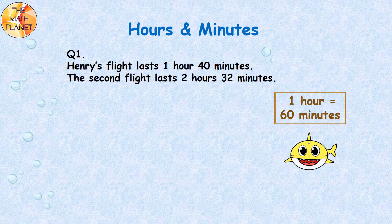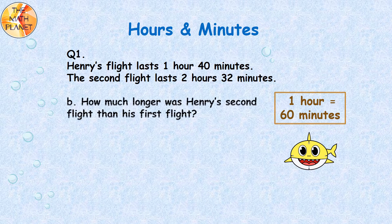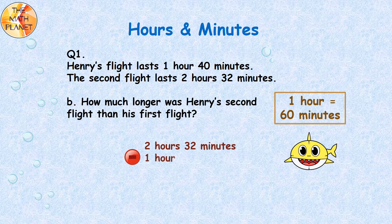Now we need to answer question B. How much longer was Henry's second flight than his first flight? We will subtract the lesser time from the greater time, so our equation will be 2 hours 32 minutes minus 1 hour 40 minutes.